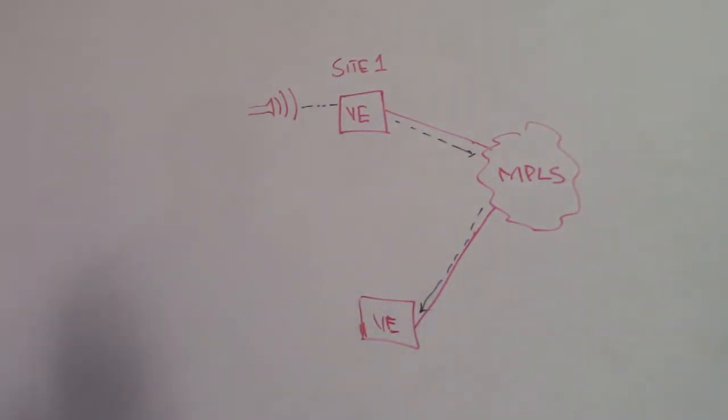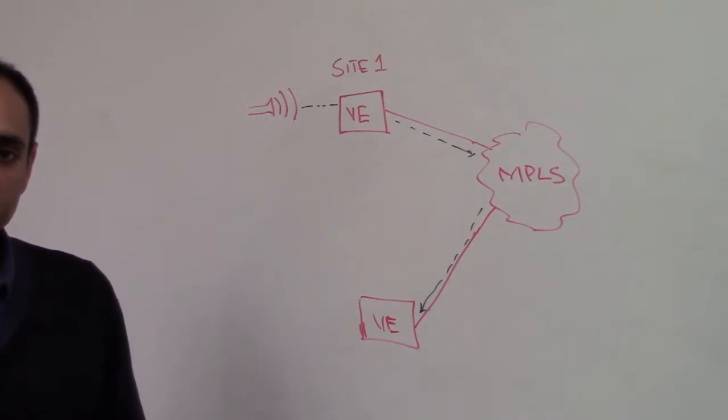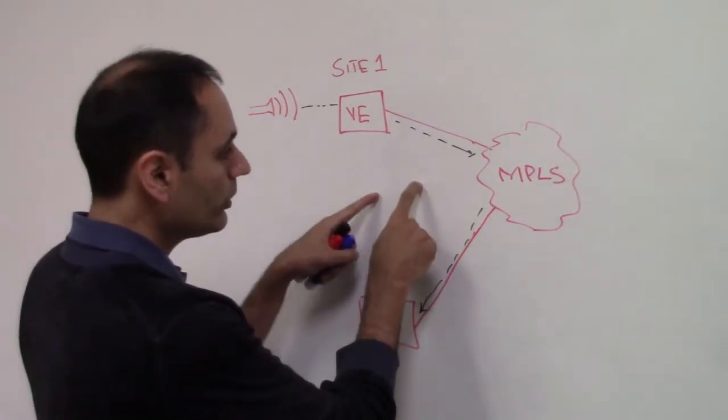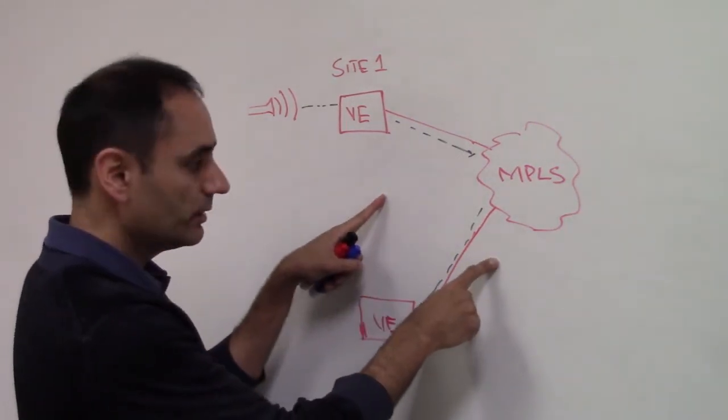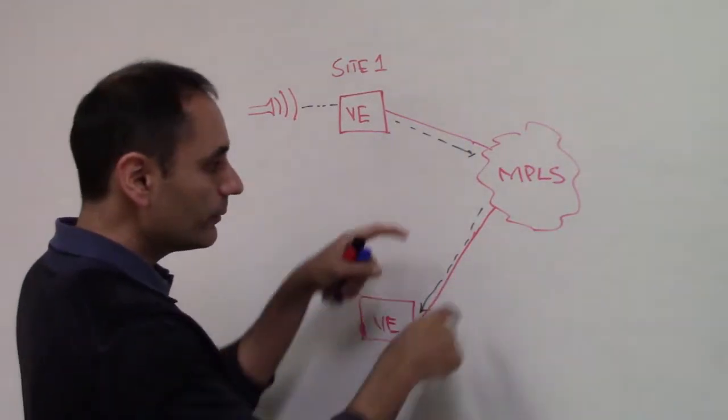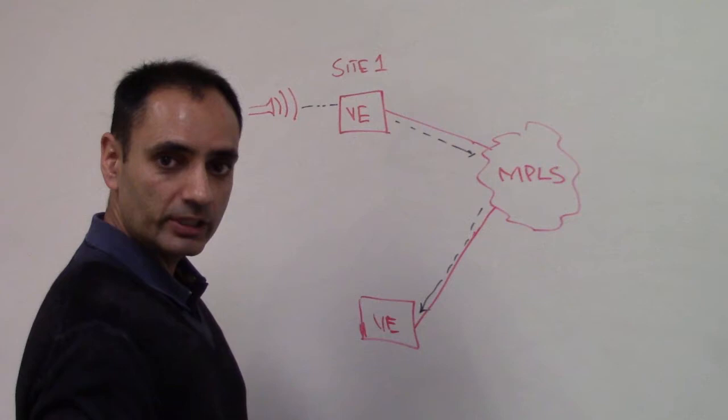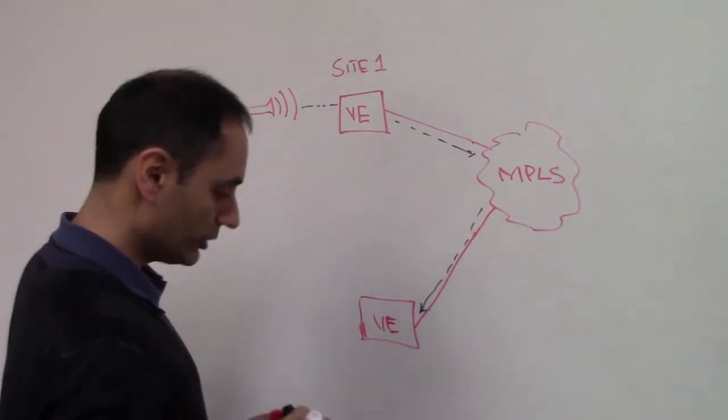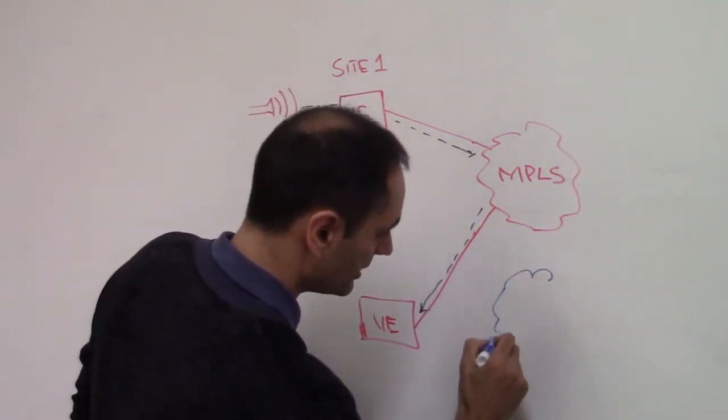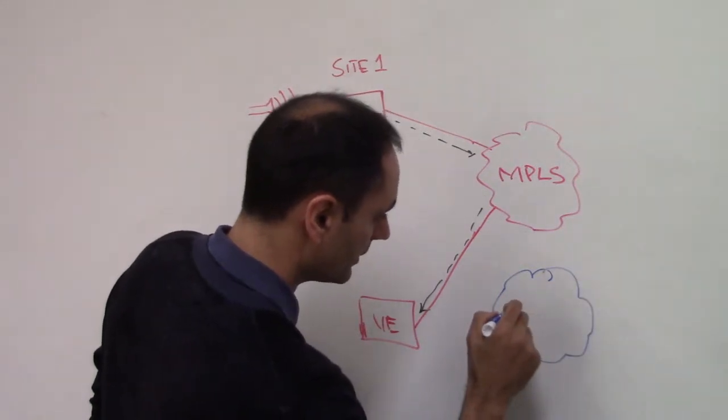You may need to introduce certain other applications which may require you to increase the bandwidth on your transport. Bandwidth on MPLS is not cheap, so you may decide to introduce another transport. Let's say you bring in a different transport which is broadband internet.